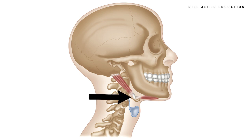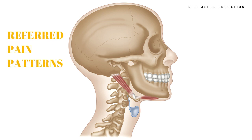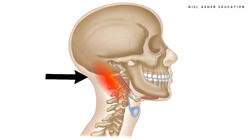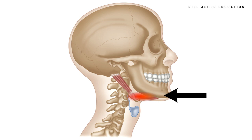The digastricus has two muscle bellies that function to open the mouth. Each of the two muscle bellies has its own referred pain pattern. The posterior belly refers into the upper aspect of the SCM muscle and, not quite as often, to the front of the throat and under the chin.